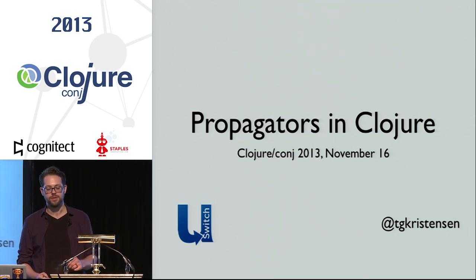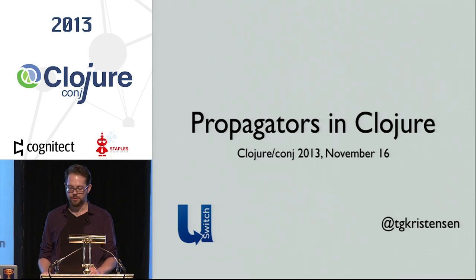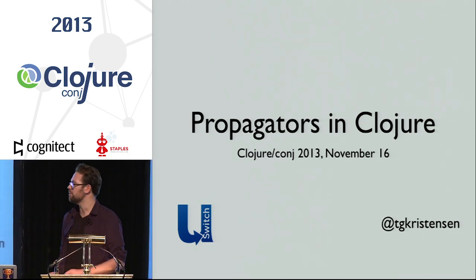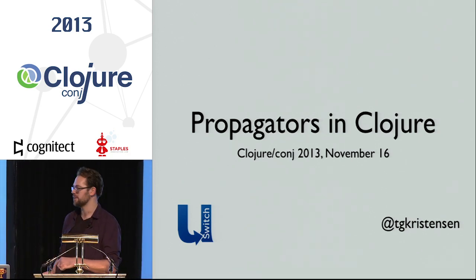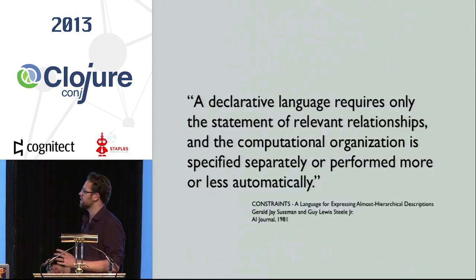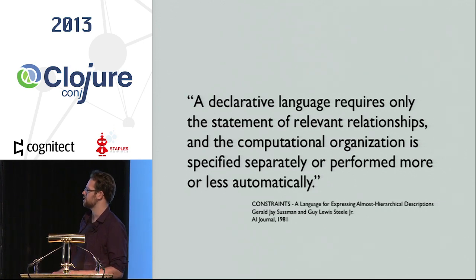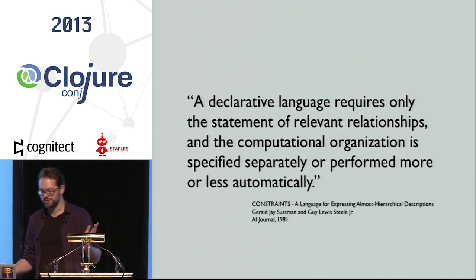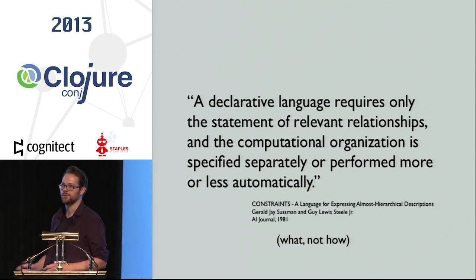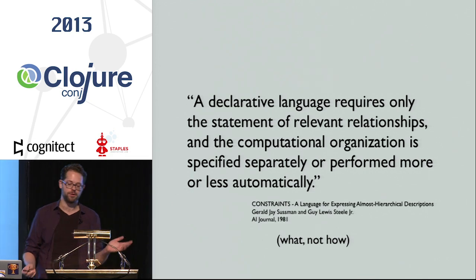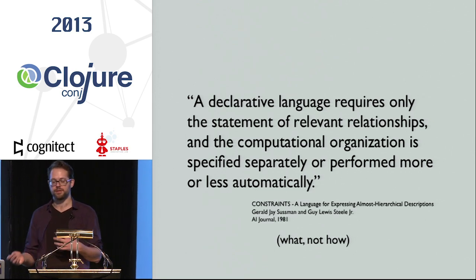The model I'm talking about is the propagator model. It's been handed down to us from the slightly more academic part of the Lisp community. Before we get going, let's remind ourselves what declarative programming is actually about. A declarative language requires only the statement of relevant relationships, and the computational organization is specified separately or performed more or less automatically. That boils down to the old saying: the what, not the how. We want to specify what we want to know and don't care about how it's calculated. SQL is a brilliant example of doing something declaratively.